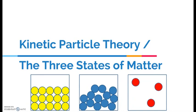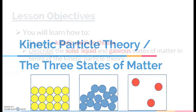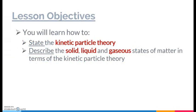This topic actually builds a lot on what you learned in lower secondary school, so you will notice there are just three diagrams on this slide that might look very familiar to you. The one in yellow is the diagram representation of the structure of a solid, next to it is the diagram for liquids, and the one on the extreme right is for gases. The first two lesson objectives of this topic are to learn how to state the kinetic particle theory, and how to describe the solid, liquid, and gaseous states of matter in terms of the kinetic particle theory itself.